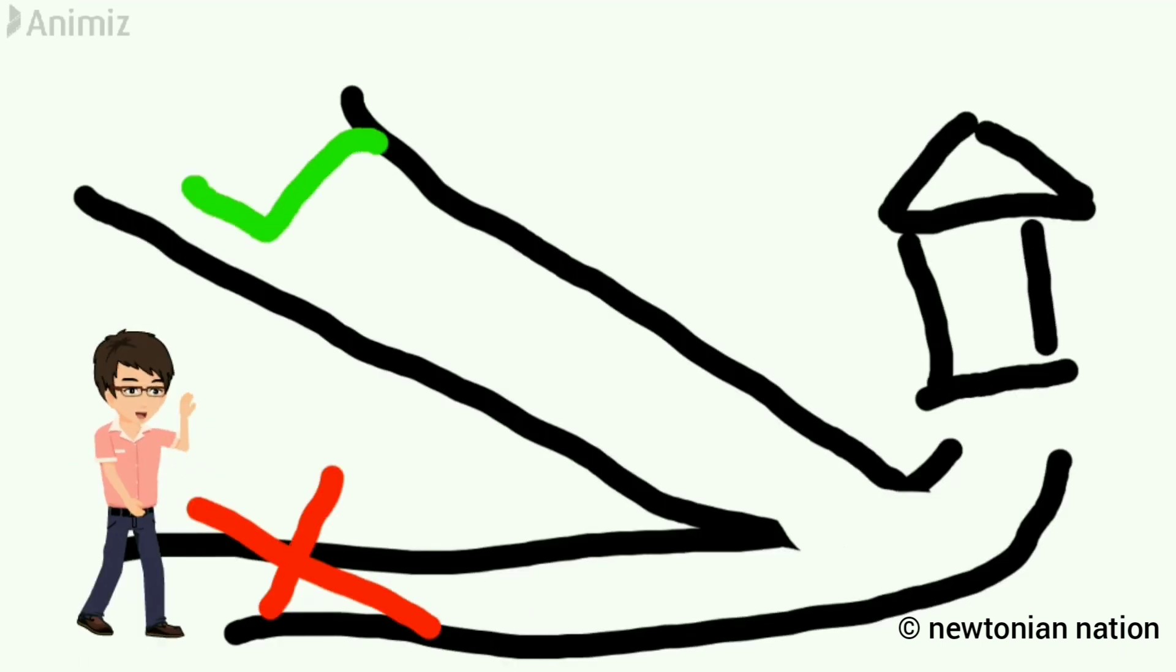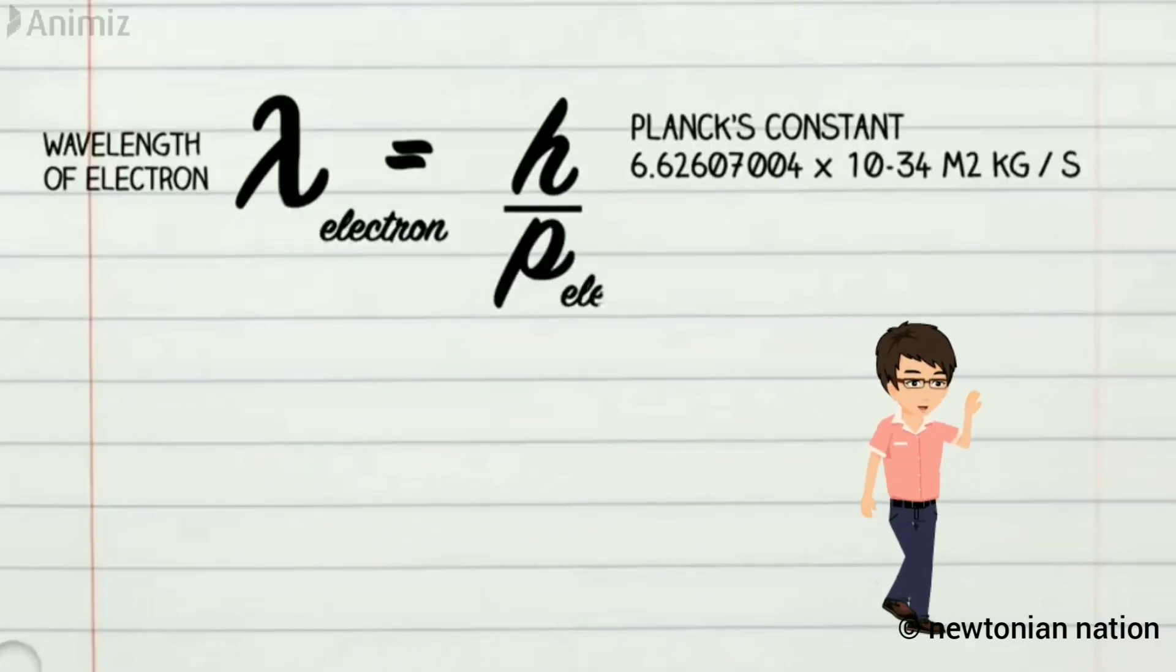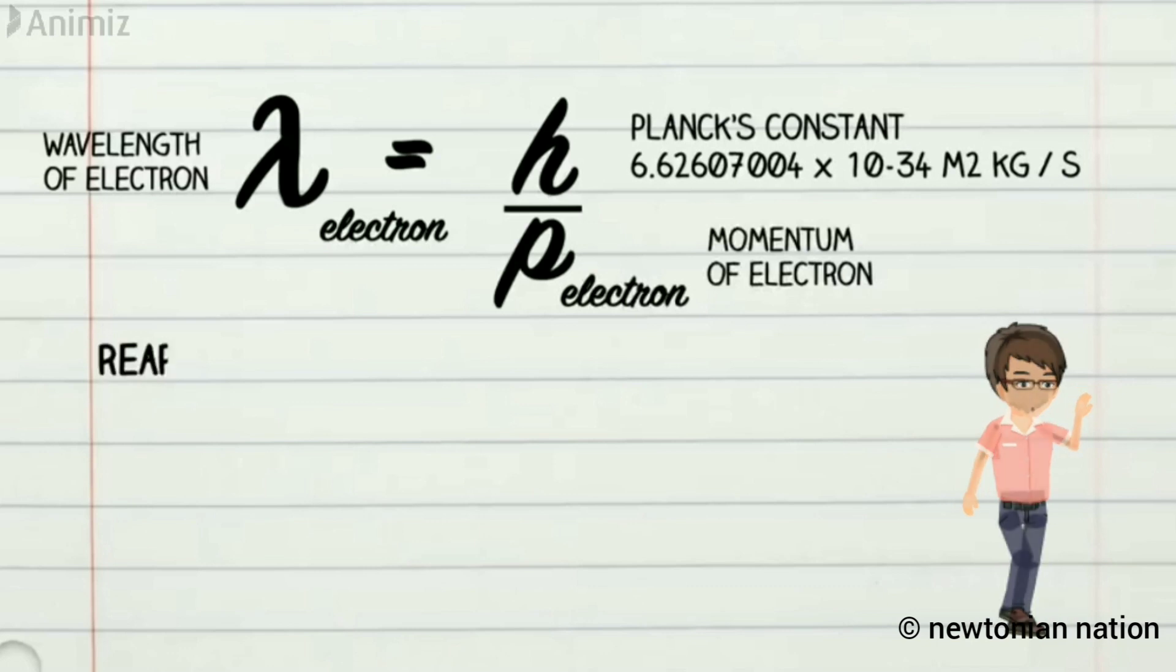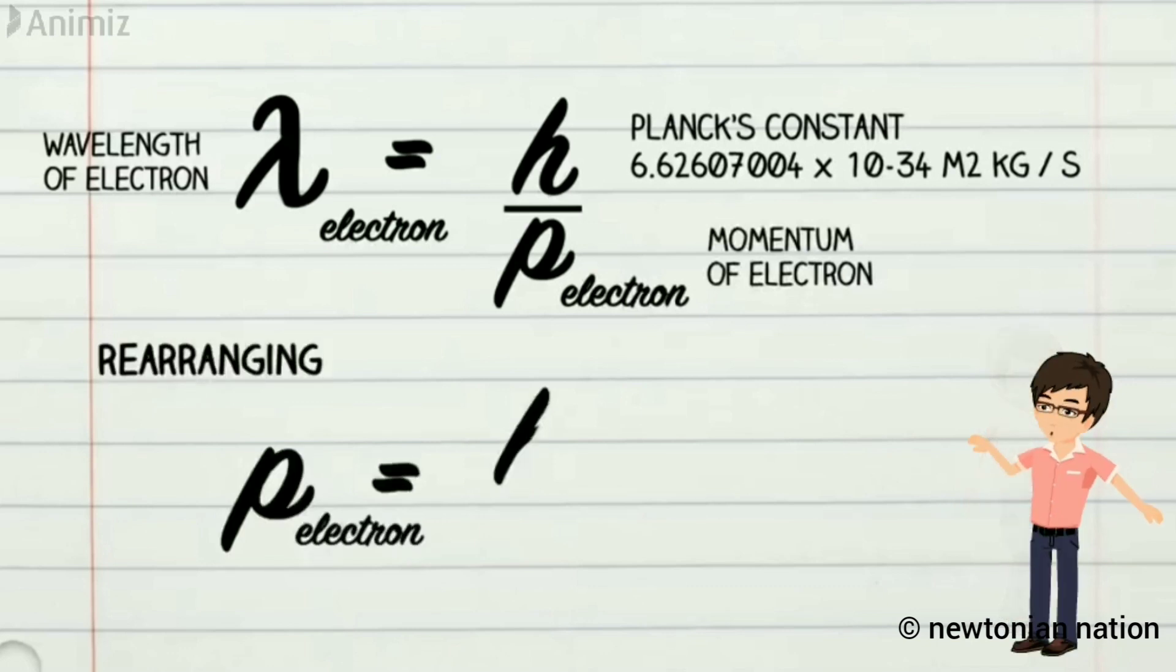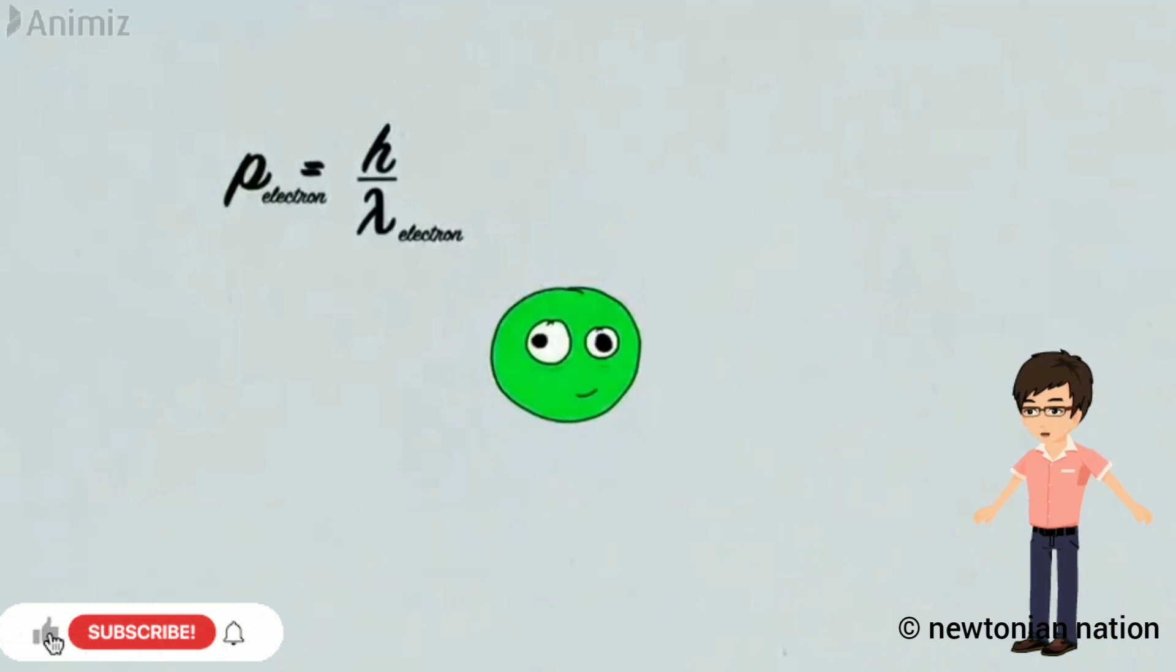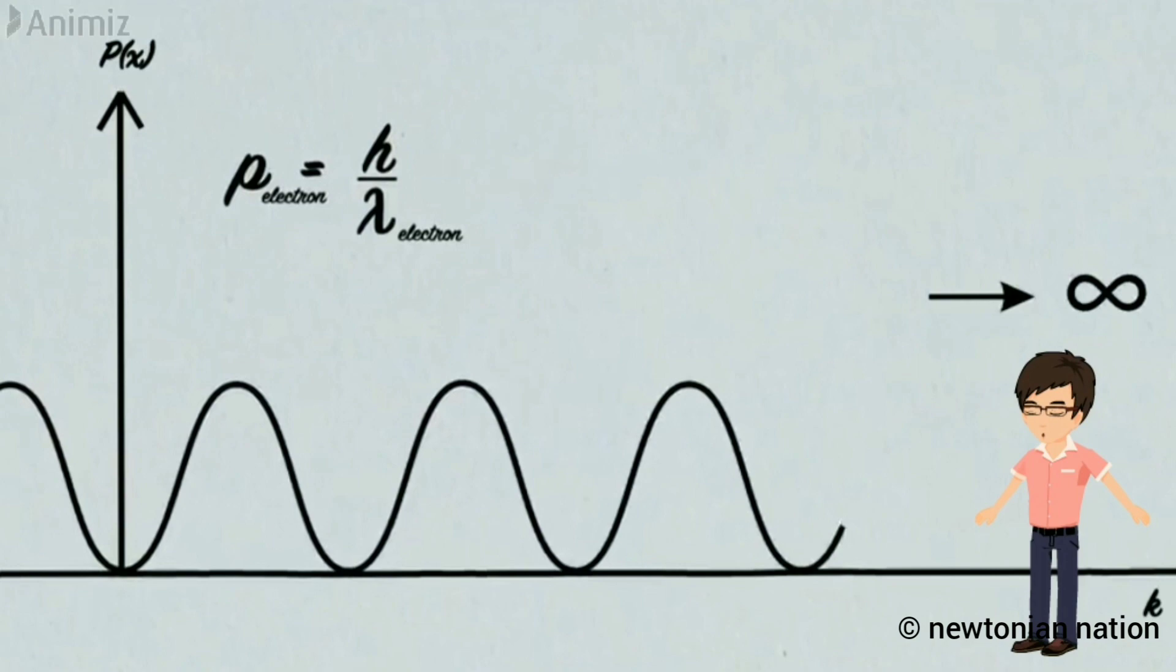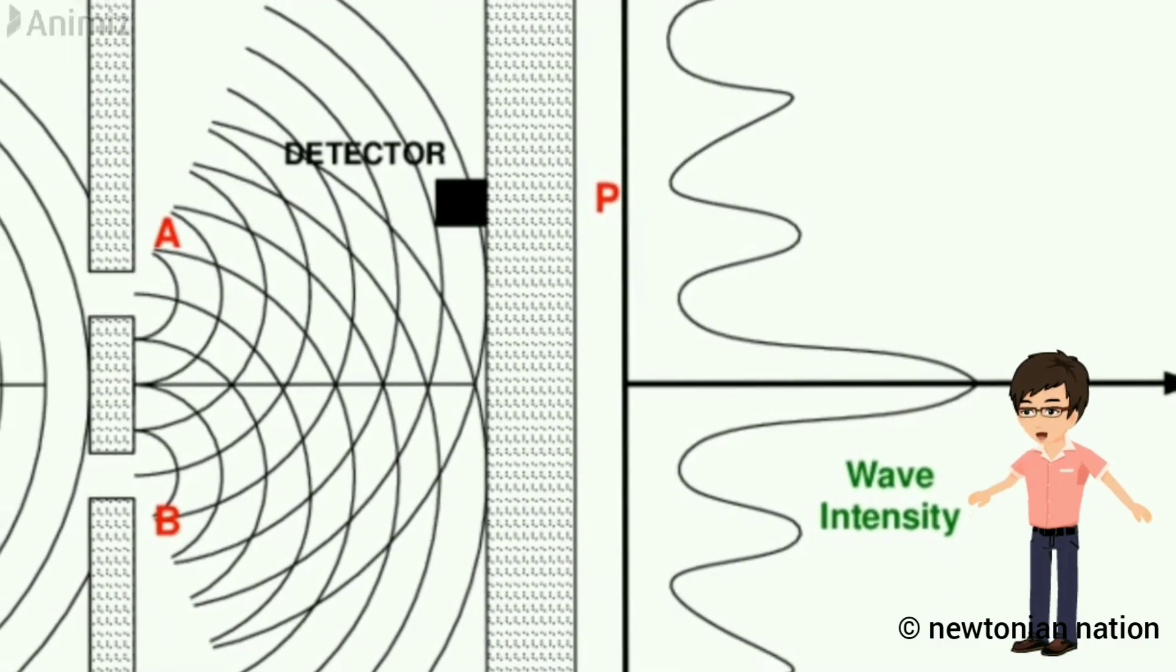By using the de Broglie wavelength equation. Wavelength is equal to Planck's constant by momentum. If we interchange, momentum is equal to Planck's constant by wavelength. So, we know that momentum of a particle can be found by knowing its wavelength of the wave. This is what I explained during the double-slit experiment.